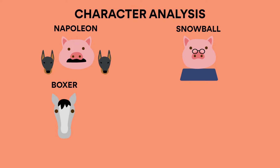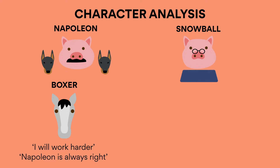Boxer. Extremely devoted to the farm and the rebellion, Boxer symbolizes what Orwell believed to be the best qualities of the proletariat, or the exploited working class, such as loyalty, strength, camaraderie, and hard work — perceivable by his personal motto of 'I will work harder.' However, he simultaneously suffers from the typical weakness of the working class, such as a naive trust in the intelligentsia and a slow-witted oblivion to political corruption, represented by his other motto of 'Napoleon is always right.'